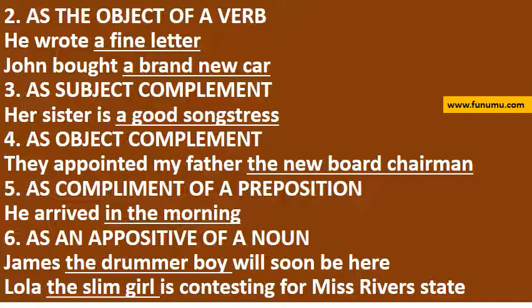3. As subject complement: 'Her sister is a good songstress.' 4. As object complement: 'They appointed my father the new board chairman.' 5. As complement of a preposition: 'He arrived in the morning.' 6. As an appositive of a noun: 'James the drummer boy will soon be here.' 'Lola the slim girl is contesting for Miss Rivers State.'